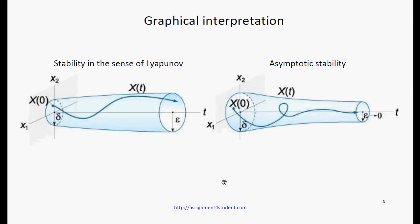Here you see graphical interpretation of these two definitions. On the left side, you see the solution of the perturbed problem. It is inside the epsilon tube of the original solution. So the solution is stable.